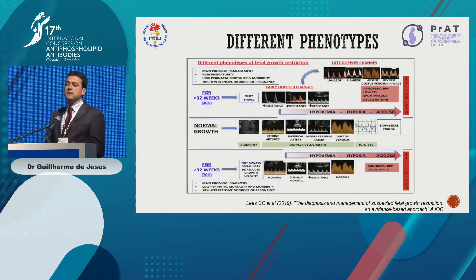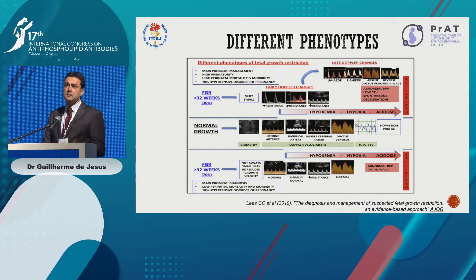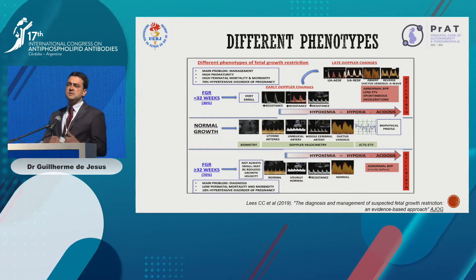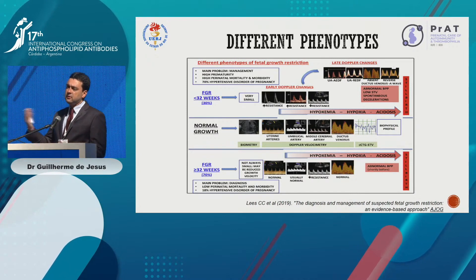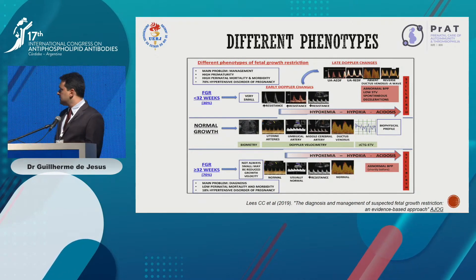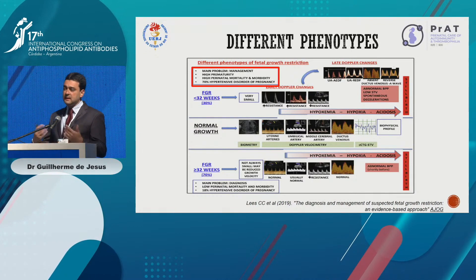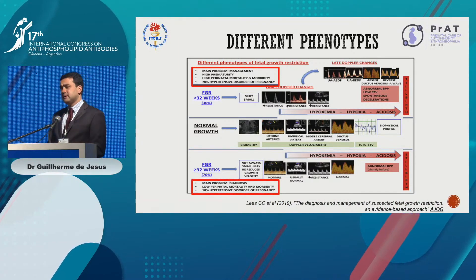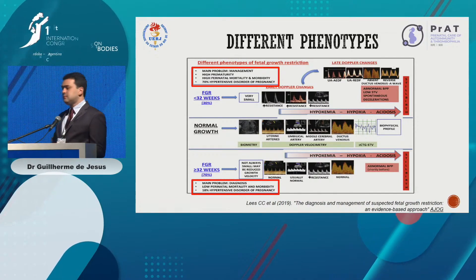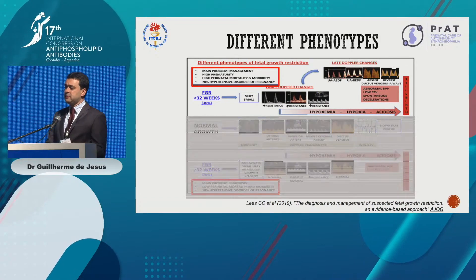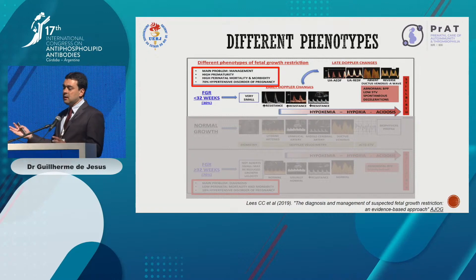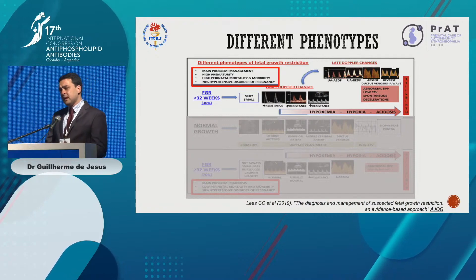Before going specifically to prevention, I want to highlight that in the obstetric field we use 32 weeks as the definition for early fetal growth restriction and 34 weeks for preeclampsia. When we talk about APS, we are thinking about early fetal growth restriction, because that's when we have high prematurity and high pregnancy loss. With late fetal growth restriction, the problem is just management — we have low mortality and APS is less relevant.